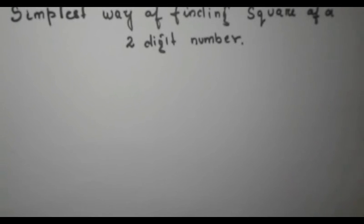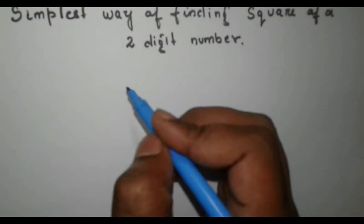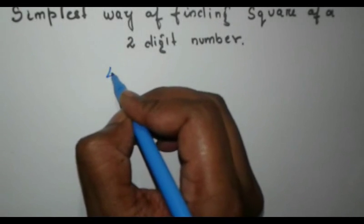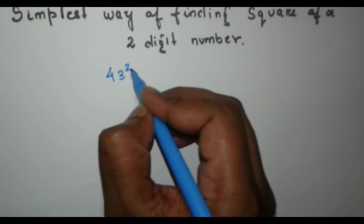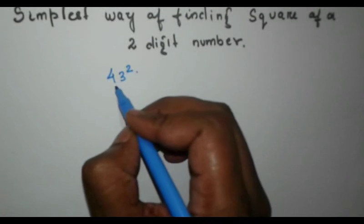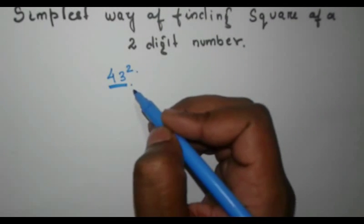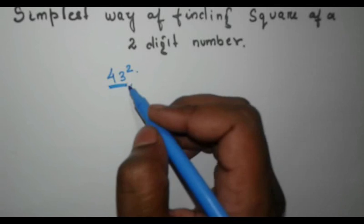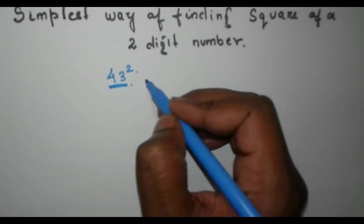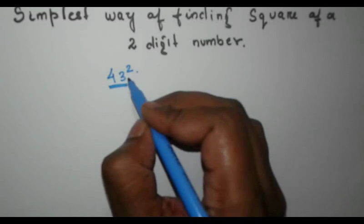Hello everyone, today we are going to learn the simplest way of finding the square of a two-digit number. Let's take an example: we have to find the square of 43. The first thing we need to do is find out the nearest tenth digit number of 43, which is 40. So now we have to subtract 40 from 43, which gives us 3.